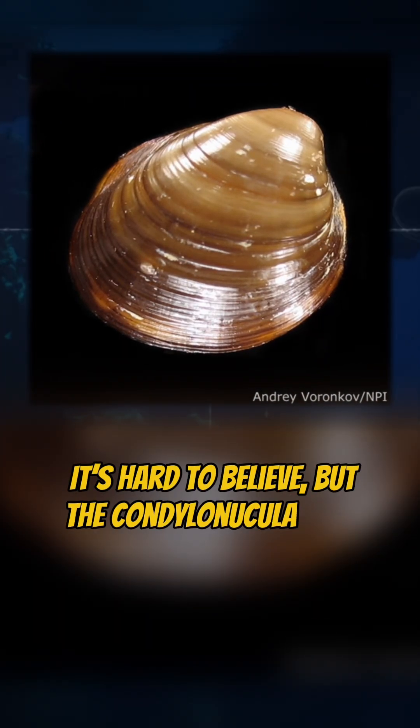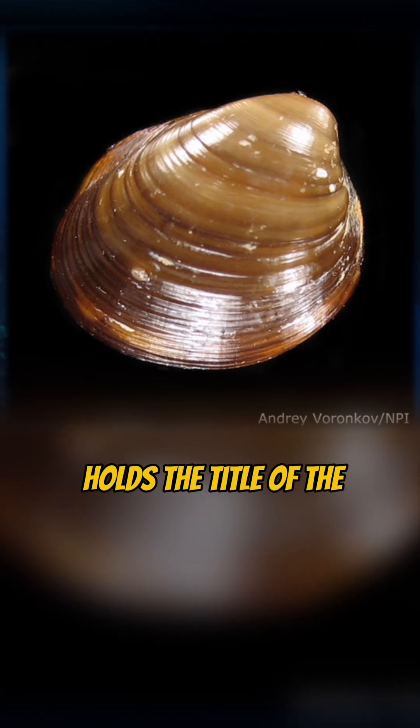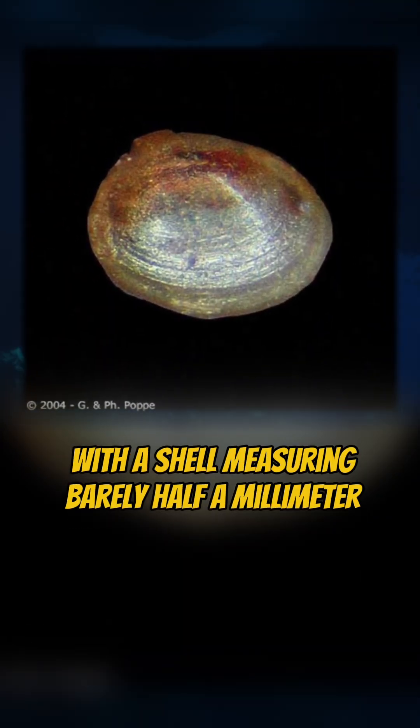It's hard to believe, but the Condelinocula Maya, a tiny saltwater clam, holds the title of the smallest known bivalve, with a shell measuring barely half a millimeter across.